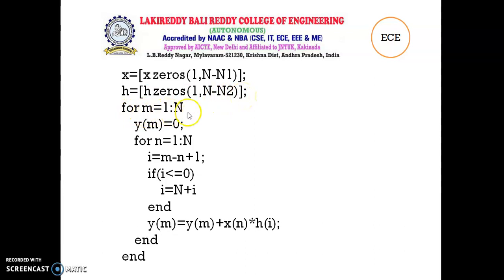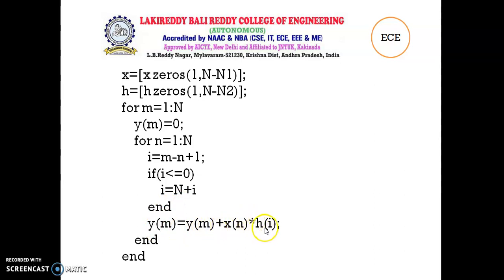For M equals to 1 to N, Y of M equals to 0. For N equals to 1 to N, I equals to M minus N plus 1. If I is less than or equals to 0, I equals to N plus I. And Y of M equals to Y of M plus X of N multiplied with H of I.